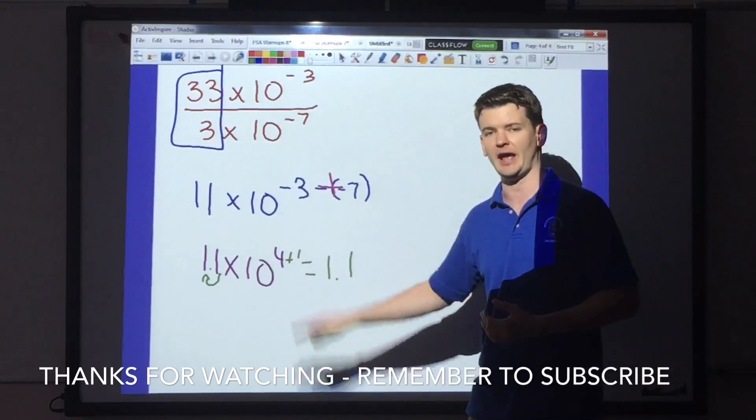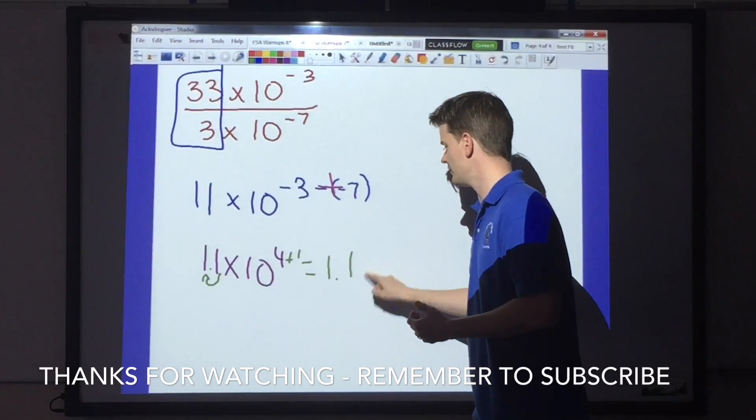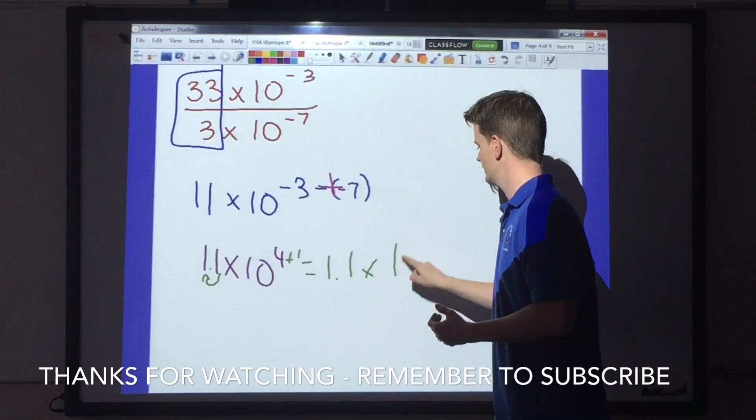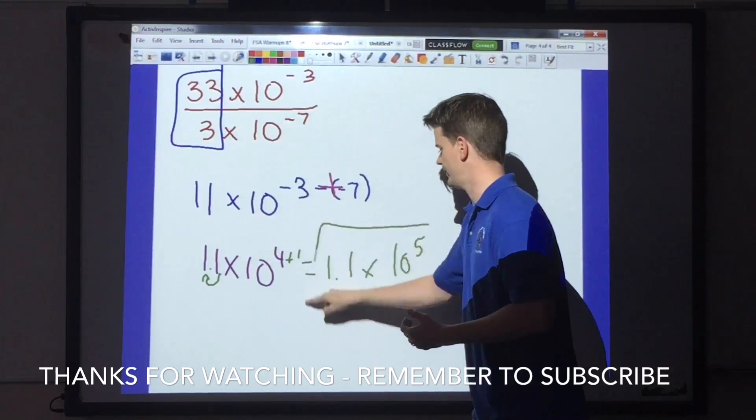I then, therefore, have to go in and add 1 to the exponent. And my final answer will be 1.1 times 10 to the fifth power.